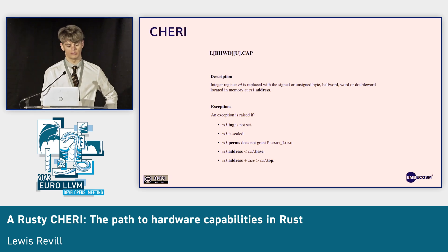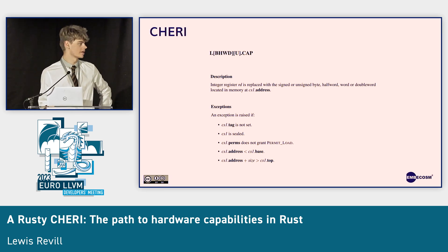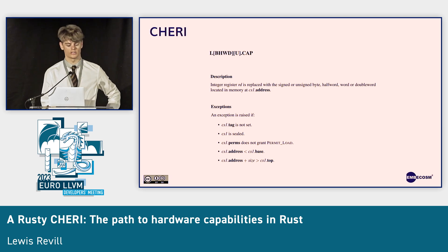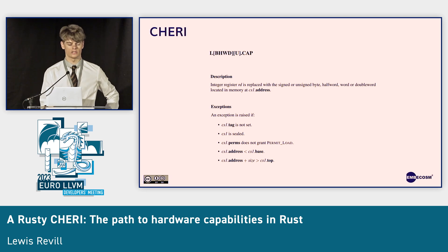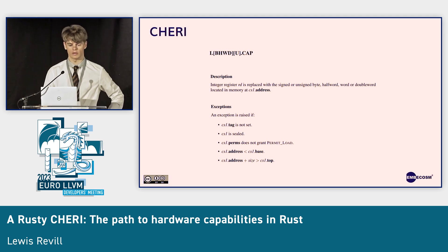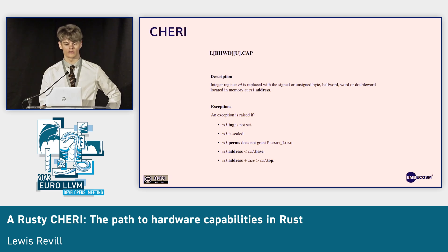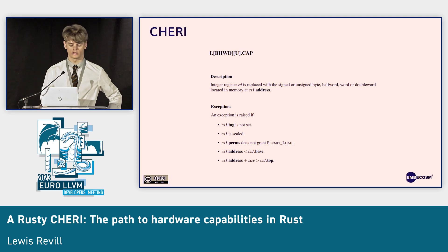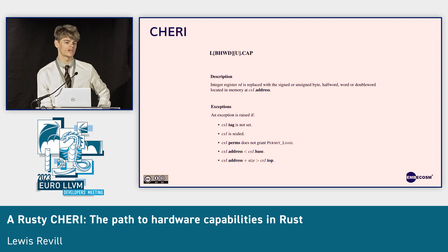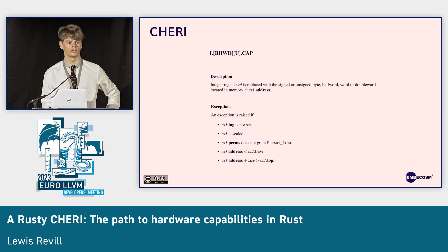Here's an example of a capability operation. This is taken from the CHERI RISC-V spec, but it's applicable to all CHERI-enabled architectures, because this is a load through a capability. It performs exactly the same as a normal pointer load, except that at runtime, an exception can be raised if it's not valid to perform that load. For example, if the validity tag is not set, that usually means that we have a capability without valid provenance. Or if the address of the capability is outside of the bounds that the capability is allowed to access, then we also have an invalid load.